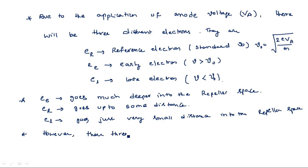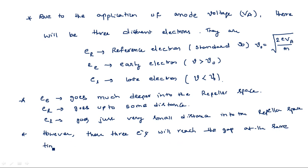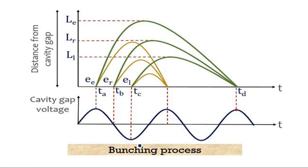However, all three electrons will reach the gap at the same time and create a bunch, which produces the RF output signal.